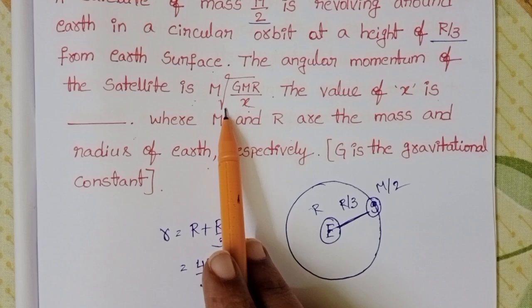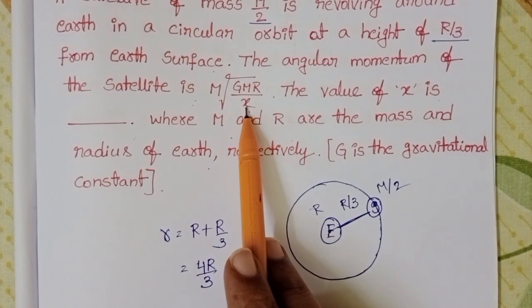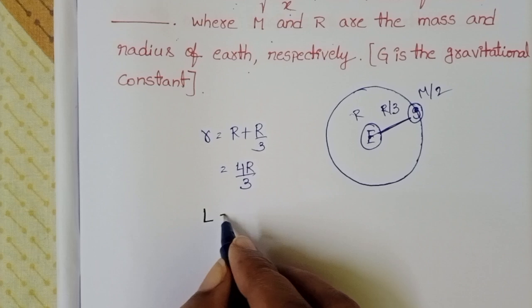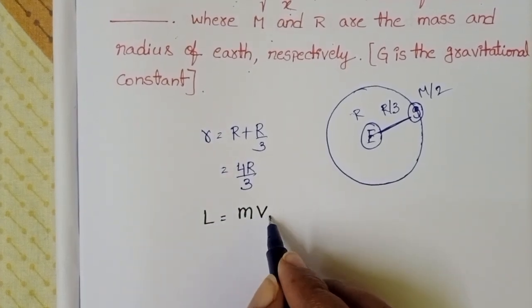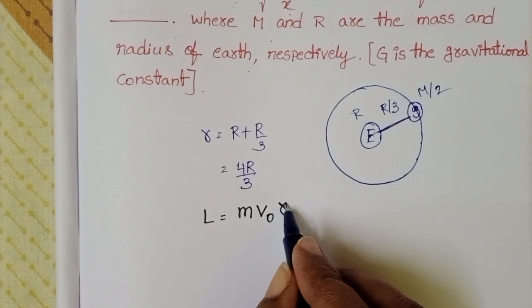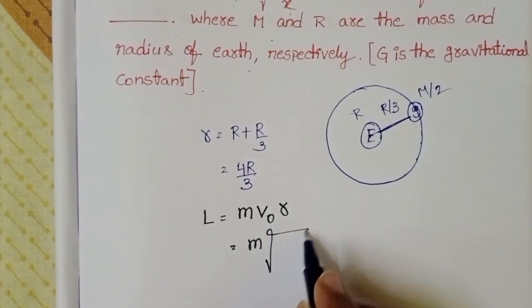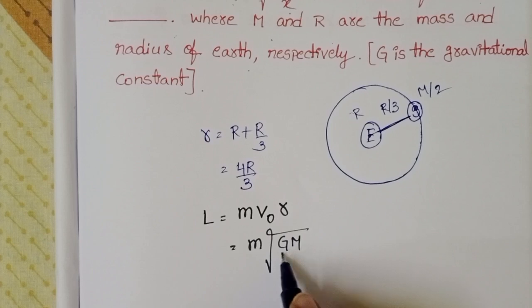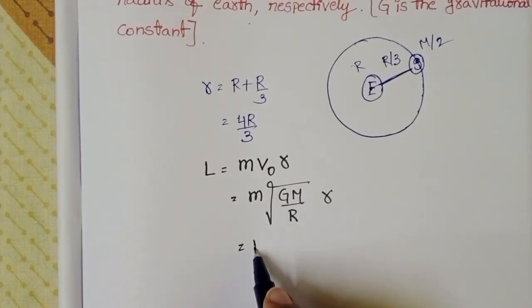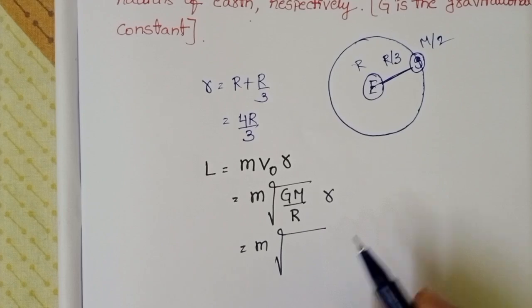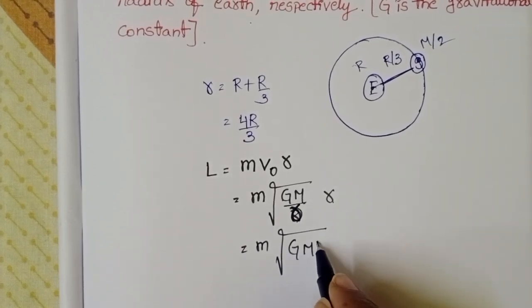We know the angular momentum of the satellite, and we have to find the value of x. Angular momentum equals mass of the satellite times orbital velocity times R. Orbital velocity formula is square root of GM/R, where M is the mass of Earth. So L equals m times square root of GM/R. Writing R into the square root, it becomes square root of GMR.